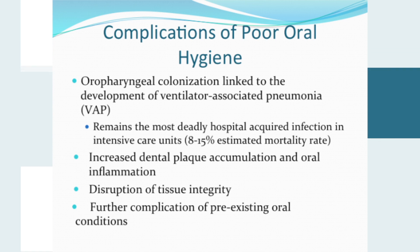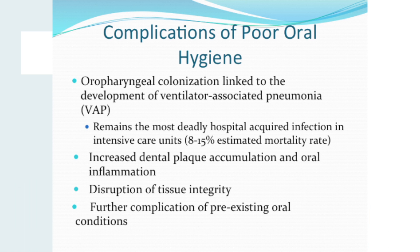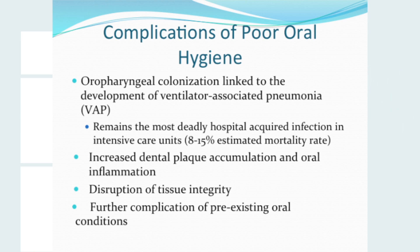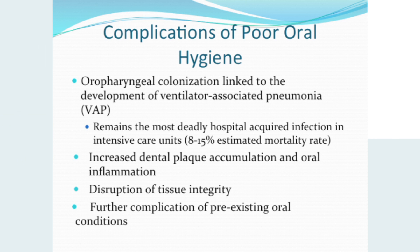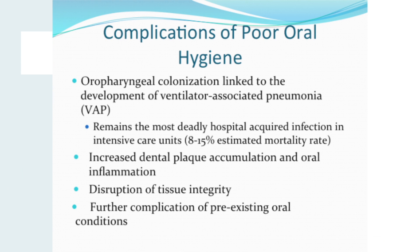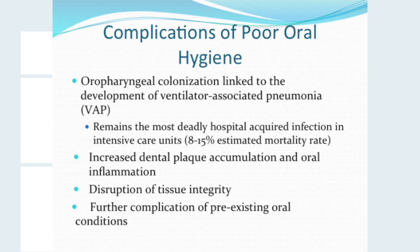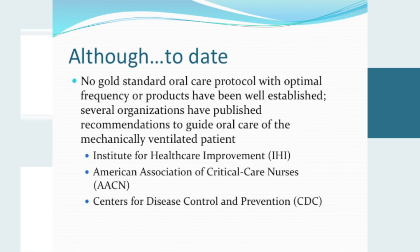Although progress has been made in the prevention of ventilator-associated pneumonia (VAP), it remains a costly and frequent complication of mechanical ventilation. Oropharyngeal colonization plays a major role in the pathogenesis of VAP; the endotracheal tube provides a direct passageway for bacteria to enter the lungs and lower respiratory tract. VAP is the most deadly hospital-acquired infection in ICU patients, with a mortality attributability estimated at 8 to 15%. Other complications of poor oral hygiene include increased dental plaque accumulation, oral inflammation, disruption of tissue integrity, and further complication of pre-existing oral conditions.